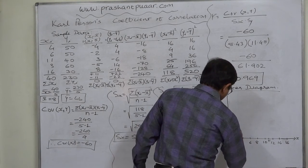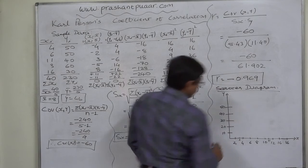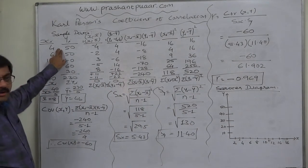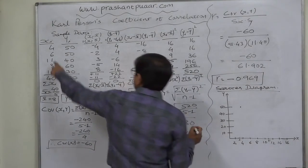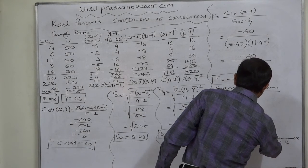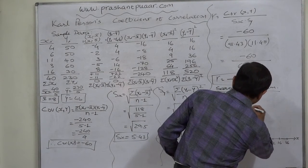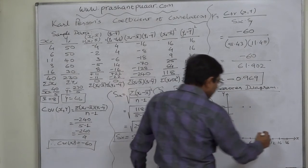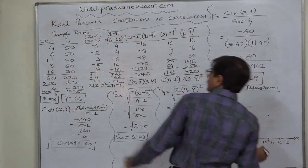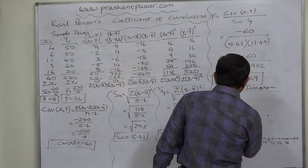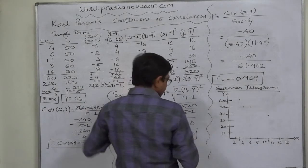On the Y axis, we mark 10, 20, 30, 40, and 50. Now we plot the coordinate pairs: (4, 50), (6, 50), (11, 40), (3, 60), and (16, 30).